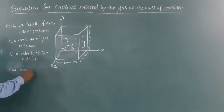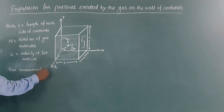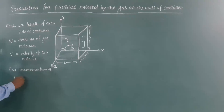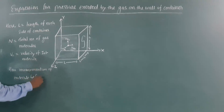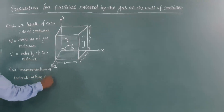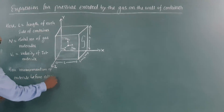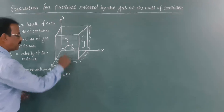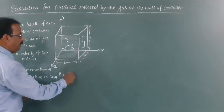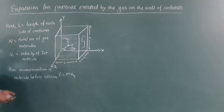The momentum of the first molecule before collision, denoted P1, is equal to the mass of that molecule multiplied by Vx1.